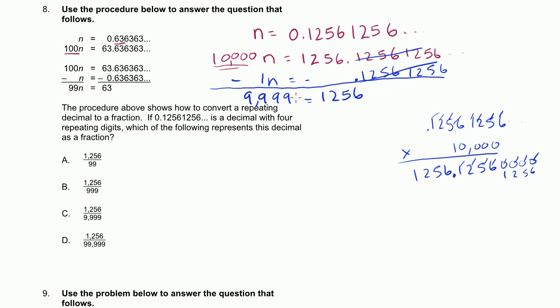So 9,999n, remember there's a coefficient there, I don't want to lose that, is equal to 1,256. Or if we divide both sides by 9,999, you get n is equal to 1,256 divided by 9,999. And that is one of our choices, 1,256 divided by 9,999.